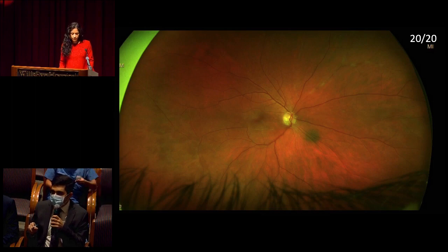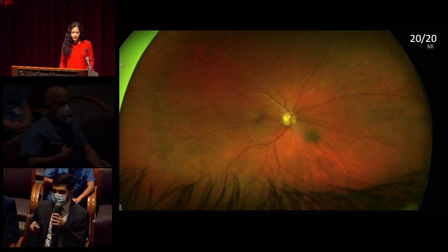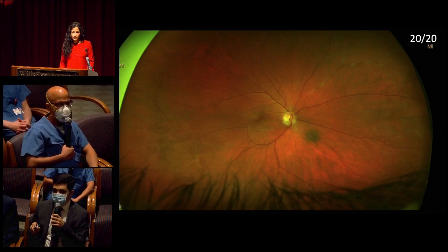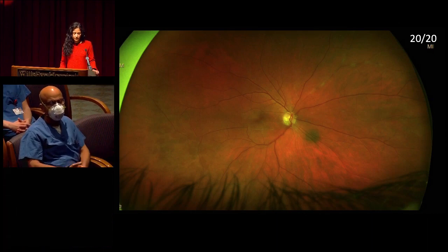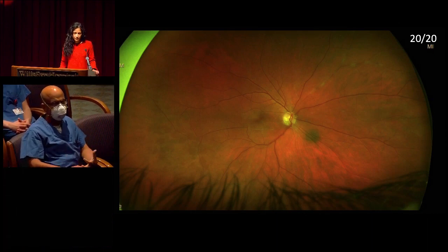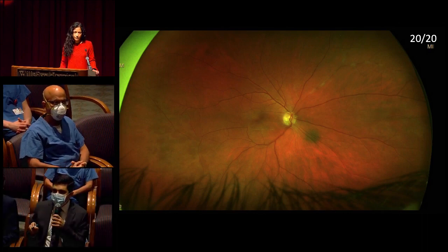Those vessels appear to be predominantly arteries. Inferotemporally, where the mottling was described, the vasculature appears attenuated — I don't appreciate much in terms of vascular structures, so it may be associated with some hypoperfusion as well.